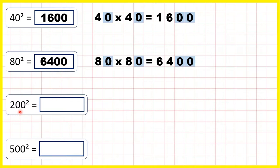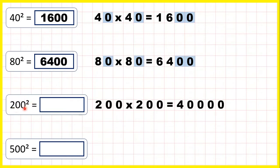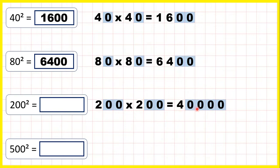Now we have 200 squared, and that squared symbol means we need to work out 200 times 200. That's 40,000, because 2 times 2 is 4, but then because we have a total of 4 end zeros in the question, we need 4 end zeros in the answer. So that's 40,000.